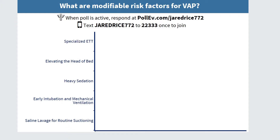Specialized ET tubes can be effective in preventing VAP, but they are expensive. CASS tubes — continuous aspiration of subglottic secretions — have a suction port built right above the cuff to remove pooled secretions. Silver-coated ET tubes are also available since silver itself is bacterially resistant, though they cost more. If you had a difficult intubation requiring multiple tubes, the price tag would skyrocket quickly. Elevating the head of the bed is also an effective means, preventing secretions from pooling and causing retained secretions in the lungs.